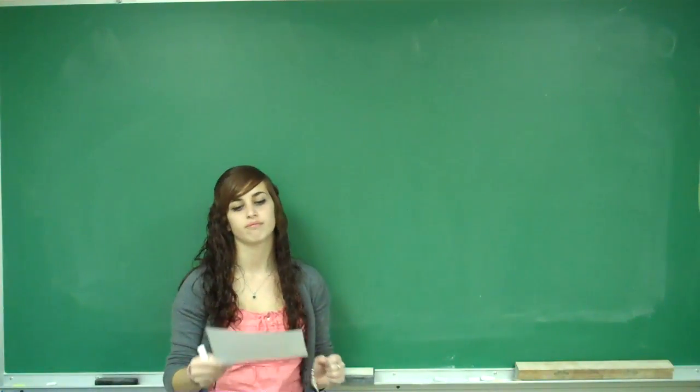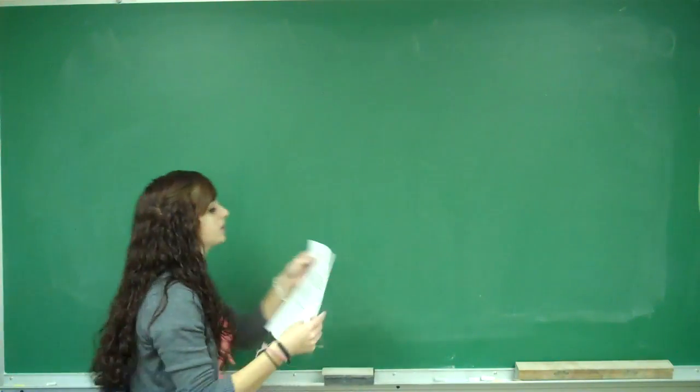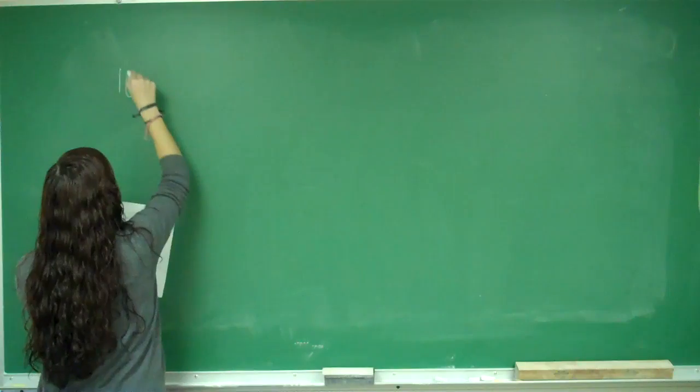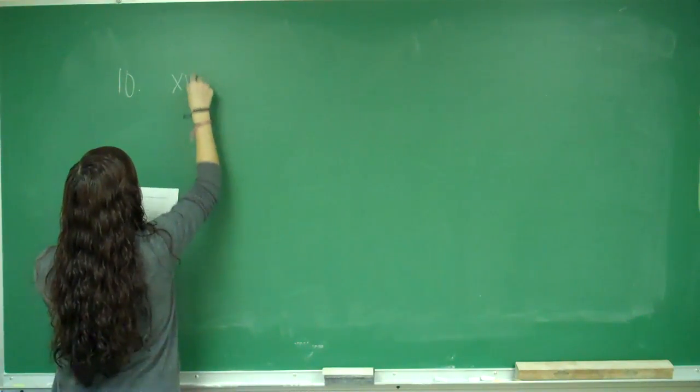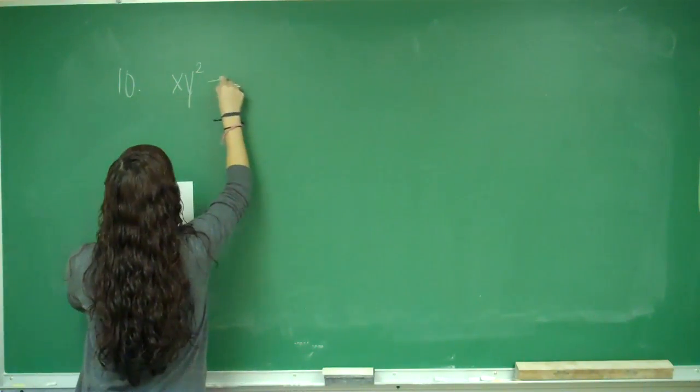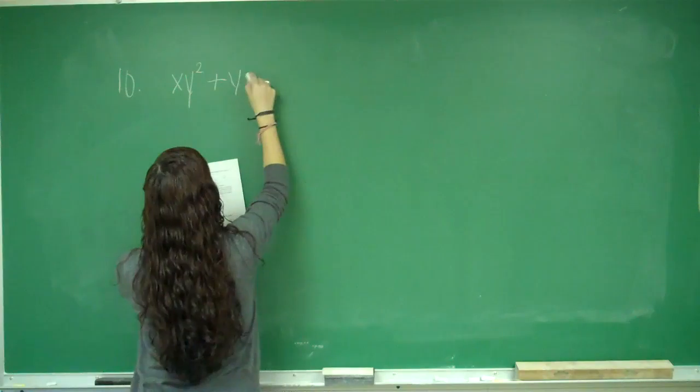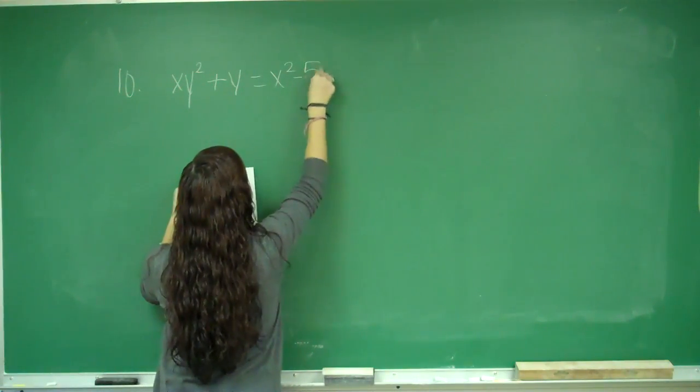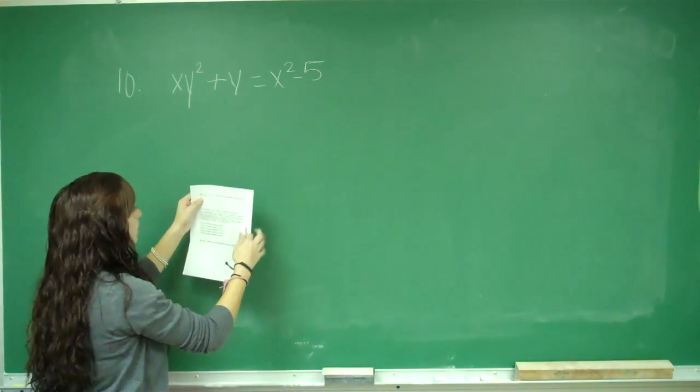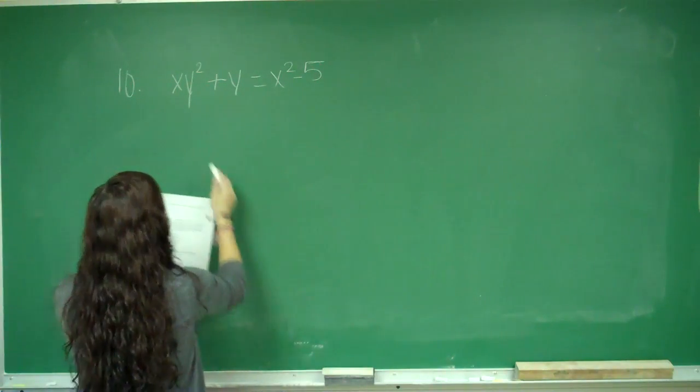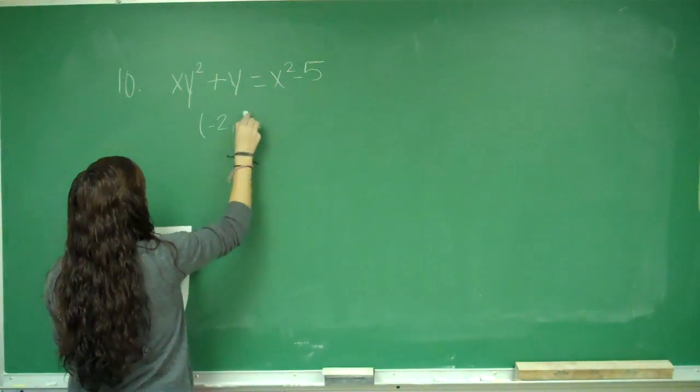This is problem number 10. It gives us a function. It says that xy² + y = x² - 5. And they want us to find the slope of the tangent to the curve at the point (-2, 1).